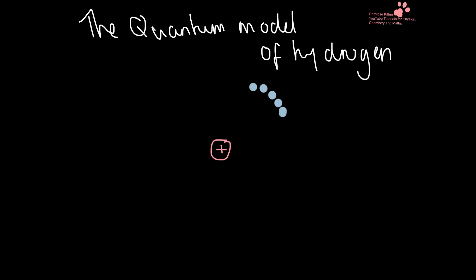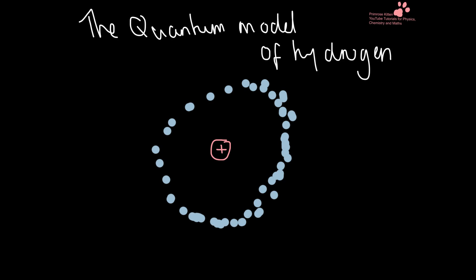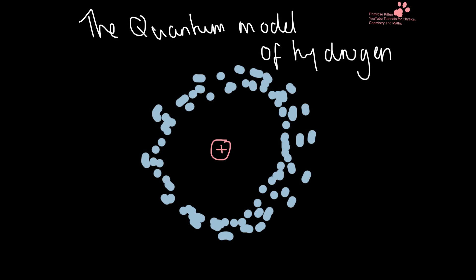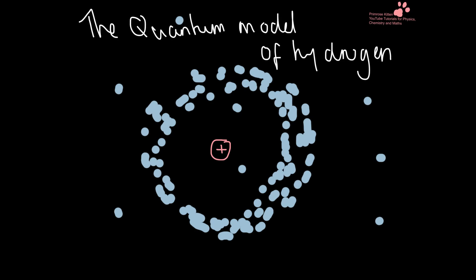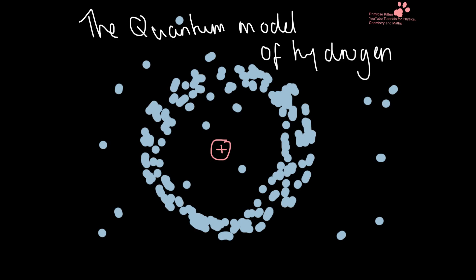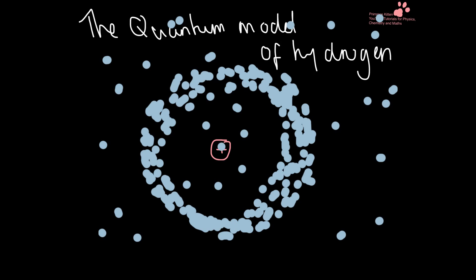This brings us onto the quantum model of a hydrogen atom. The only thing we know is the likelihood of where an electron is going to be. You can see from the dots that the likelihood of an electron appearing is in what Bohr's model calls a shell — but every so often electrons will appear in other locations. There is nothing stopping an electron randomly appearing wherever it wants to; just because it's most likely to appear in what Bohr calls shells doesn't mean it won't appear in other places.